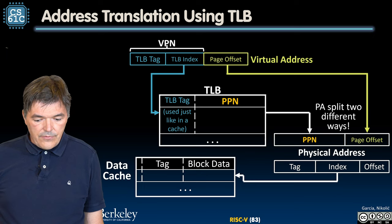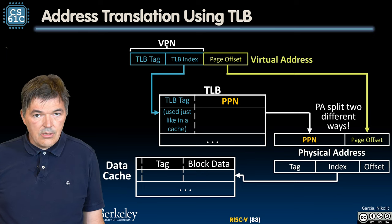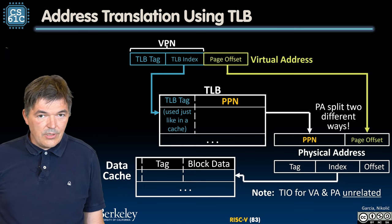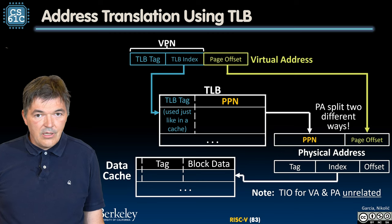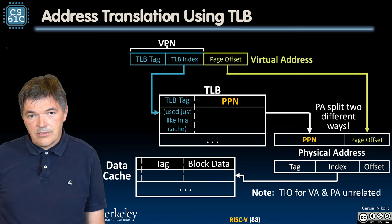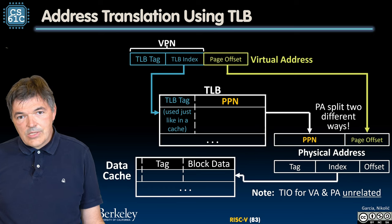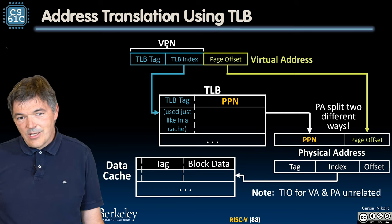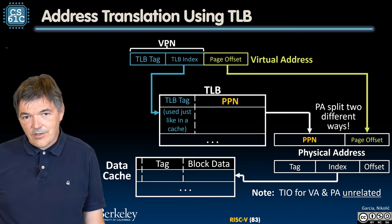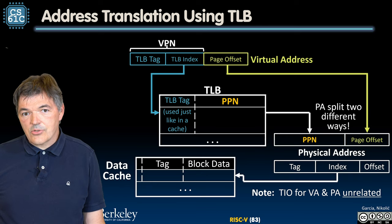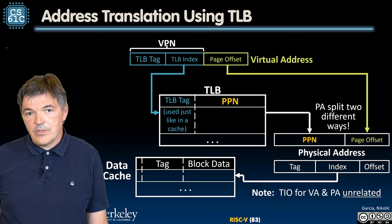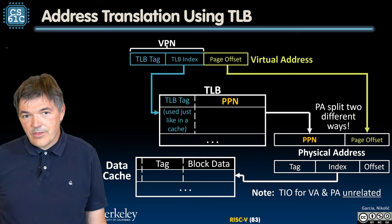Now we are going to split it again in a different way — we break it up into the format used for accessing caches: tag, index, and offset. We use that to reference the data cache. If data is in the cache, we have a hit; if not, we have to update it. And that is basically it. After a quick break, we are going to see how this is actually implemented in a microprocessor data path.